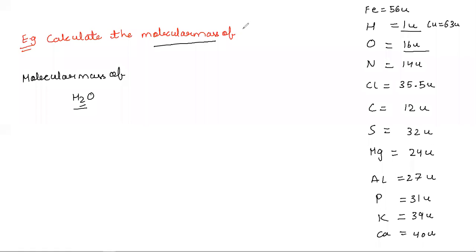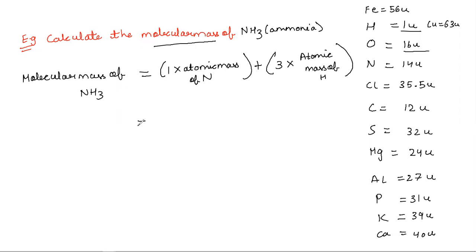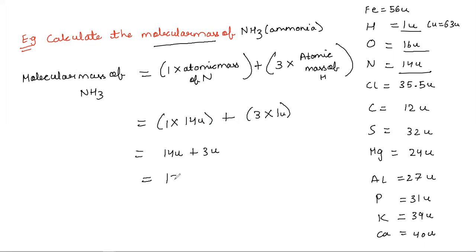Find the molecular mass of NH₃, also known as ammonia. Molecular mass is the sum of atomic masses of all atoms present. How many atoms of nitrogen? One — so 1 into atomic mass of nitrogen. Plus, how many hydrogen? Three — so 3 into atomic mass of hydrogen. Atomic mass of nitrogen is 14u, atomic mass of hydrogen is 1u. So 14u plus 3u gives us 17u. The molecular mass of ammonia is 17u.